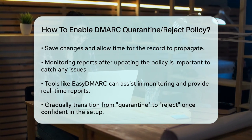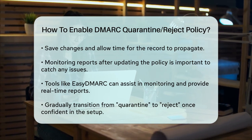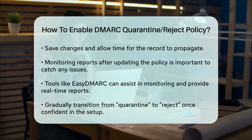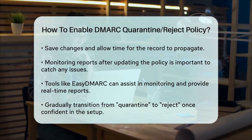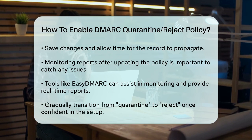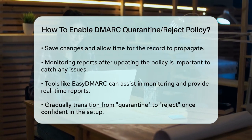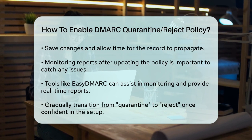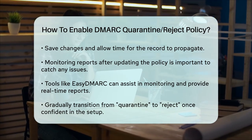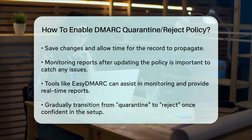By following these steps, you'll be able to enable a DMARC quarantine or reject policy, protecting your domain from spoofing and ensuring that your emails are delivered securely. Remember to start with a quarantine policy if you're new to DMARC and gradually move to reject once you're confident in your setup. This approach will help you avoid any potential issues with legitimate emails being blocked.